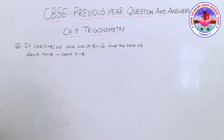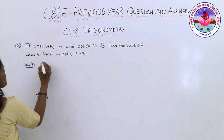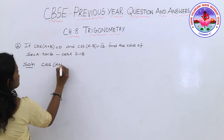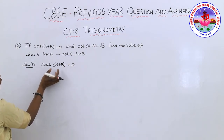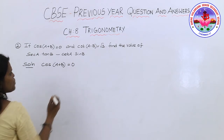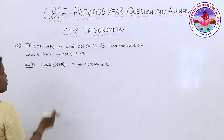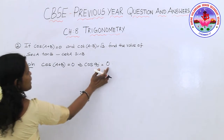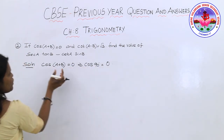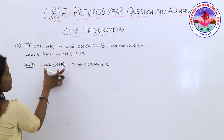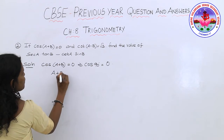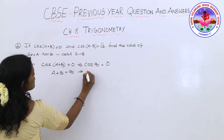Second problem: if cos(A+B) = 0 and cot(A−B) = √3, find the value of sec A · tan B − cot A · sin B. Coming to the solution, for the first case cos(A+B) = 0. From the trigonometric table, cos 90° = 0. Comparing both sides, A + B = 90°. Calling this equation 1.